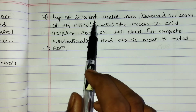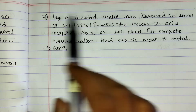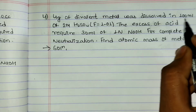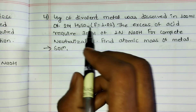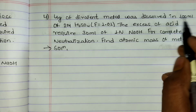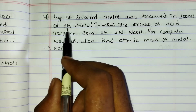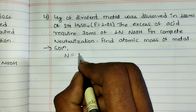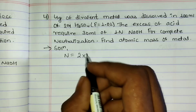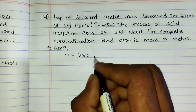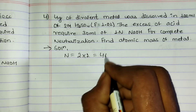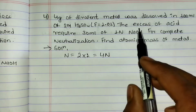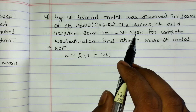Numerical 4: A divalent metal was dissolved in 100 ml of 2M H₂SO₄ solution. For H₂SO₄, normality = molarity × basicity = 2 × 2 = 4N. The excess acid required 30 ml of 1N NaOH for complete neutralization.